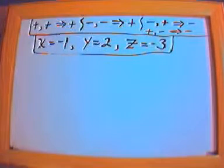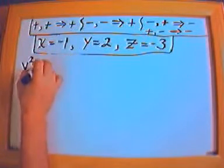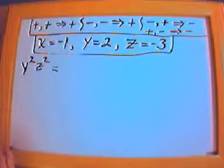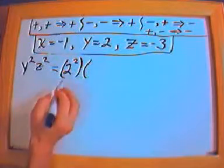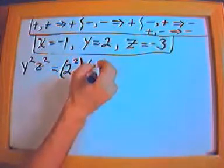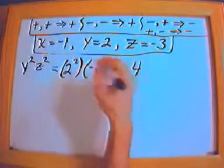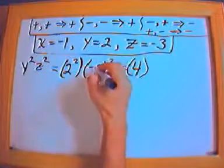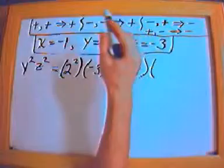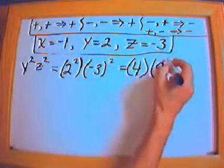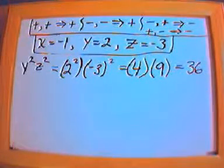Let's say we have y squared times z squared. That equals 2 squared times (negative 3) squared. 2 squared is 4 — that's 2 times 2. Negative 3 squared is negative 3 times negative 3; negative times negative gives a positive, so 3 times 3 is positive 9. Then 9 times 4 is positive 36, and that is the answer.